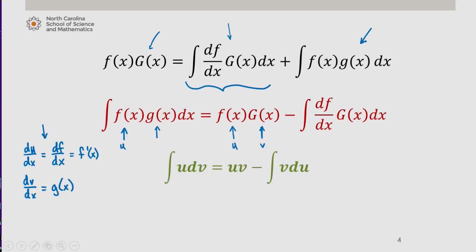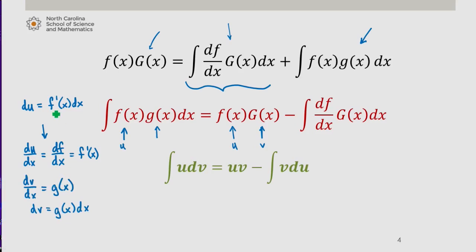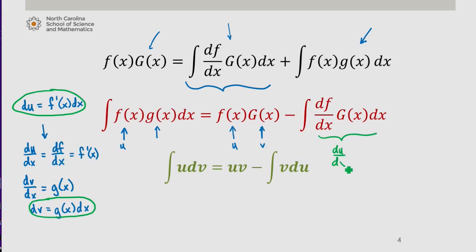With du/dx being f prime of x, we can express that as du equals f prime dx. And with dv/dx being g of x, we have that dv is equal to g of x dx. So with f times capital G we have u times v; df/dx is du/dx; capital G is v times dx, which simplifies to v du. This is the form you'll likely see in most textbooks.